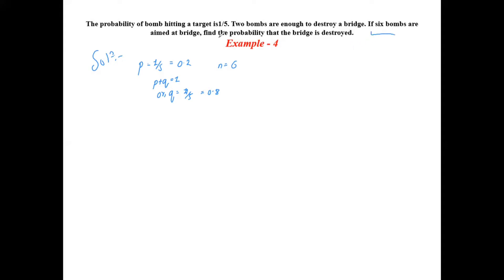Two bombs are enough to destroy a bridge — this means at least two bombs are required. So when we have two or more bombs hitting, that is enough to destroy it. This means we have to find the probability that X is greater than or equal to two.